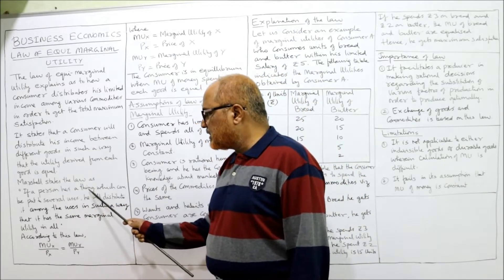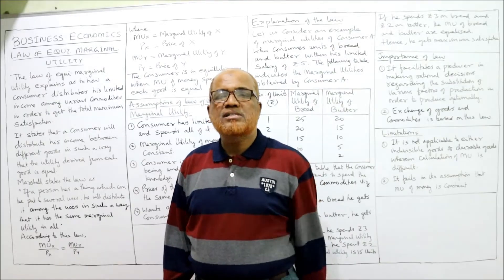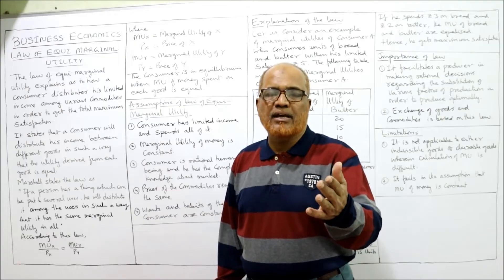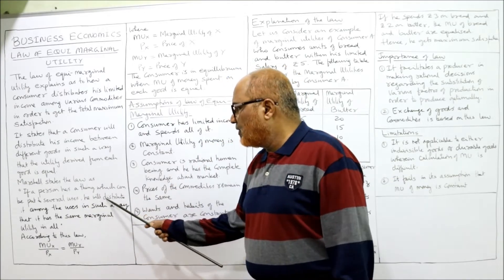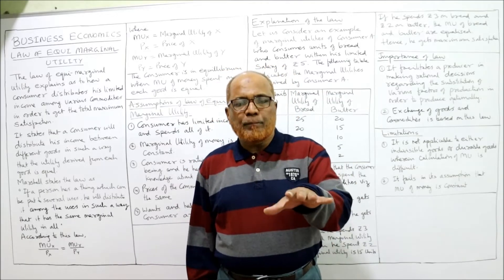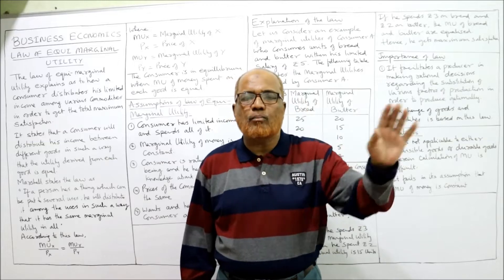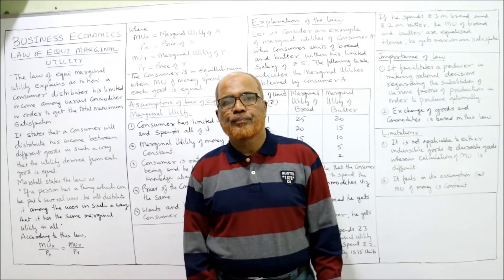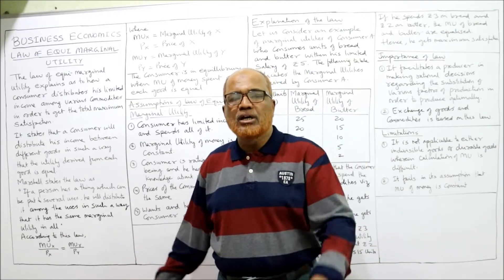Marshall says: if a person has a thing which can be put to several uses — here we assume that thing is income, which can be spent on purchasing a car, an air conditioner, a bike, goods, or travel — he will distribute it among the uses in such a way that it has the same marginal utility in all. If a person wants to get maximum utility out of his limited income, he must distribute it among various commodities so that the marginal utilities of all commodities are equal. This is Marshall's definition of the law of equi-marginal utility.